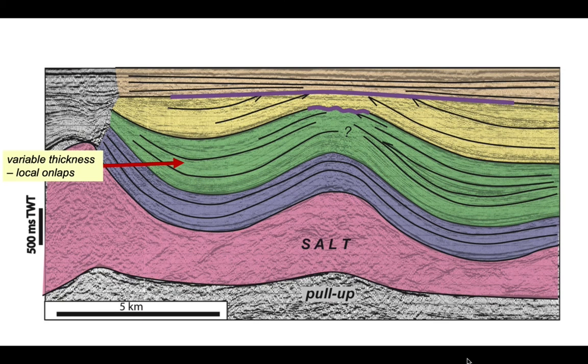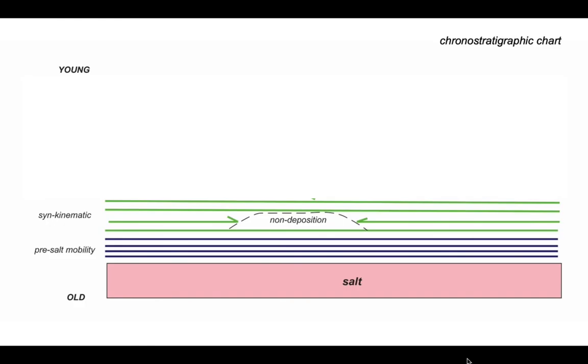However, the green layer on top shows variable thickness and local onlaps within itself, which we can plot schematically like this. These internal onlaps reflect patches of non-deposition which correspond to the main part of the salt dome and certainly its flanks.